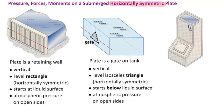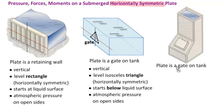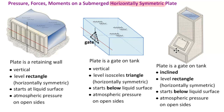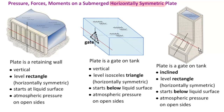One more. We have this plate here — the plate is a gate on this tank. However, now the plate is inclined; it has an angle with the horizon. But the plate itself is still a level rectangle, so if this is the horizon, our gate is level with the horizon — it's horizontally level. And again, it's symmetric; it's a rectangle, so at every point along this horizon, we have the same amount of plate on the left as on the right. This again starts below the liquid surface, so we'll have to work with the angle and with the depth. And again, atmospheric pressure on all the open sides.